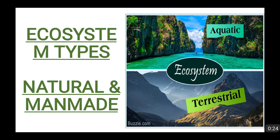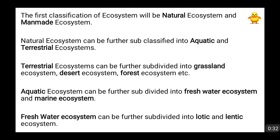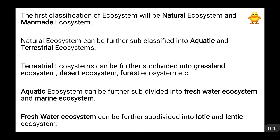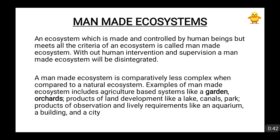The very first classification of ecosystems is natural and manmade. Ecosystems can be divided into natural ecosystems and manmade ecosystems. Before looking into the further subclassification of natural ecosystems, let us have a look at the manmade ecosystem.